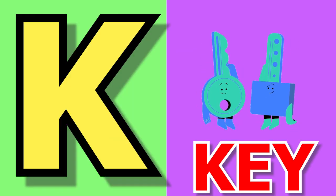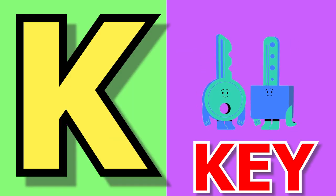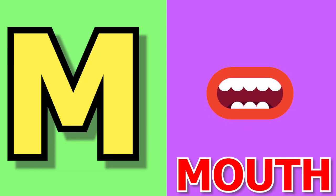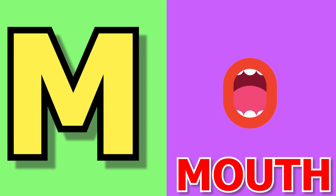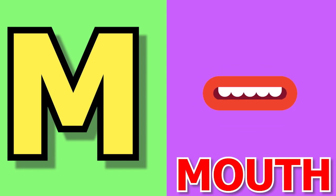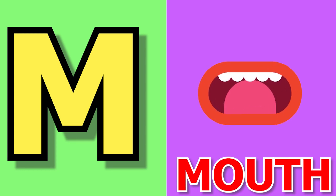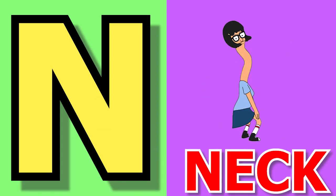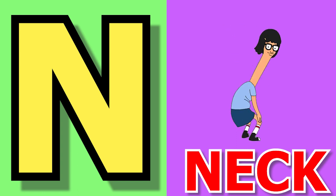K for key, key means chubby. L for locket, locket means locket. M for mouth, mouth means moo. N for neck, neck means garden.